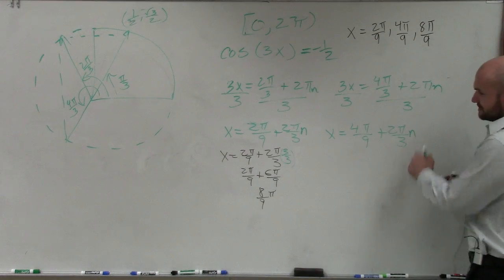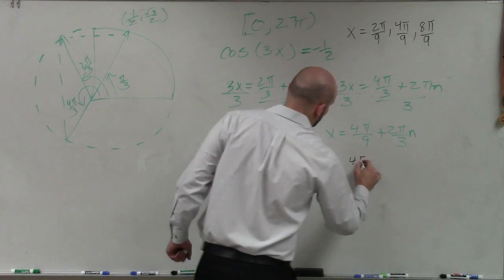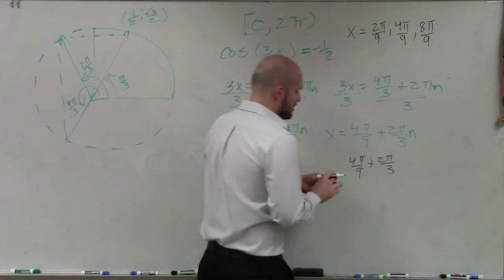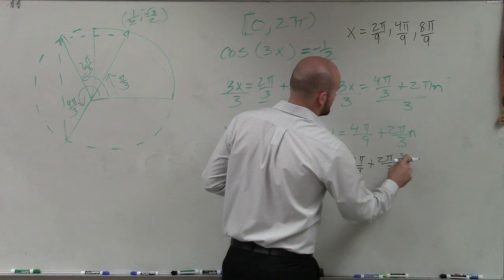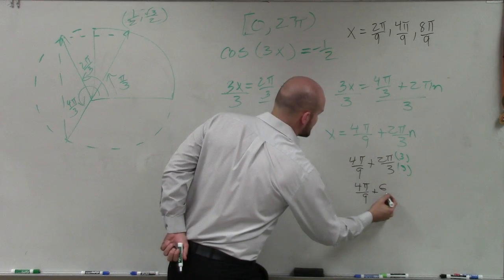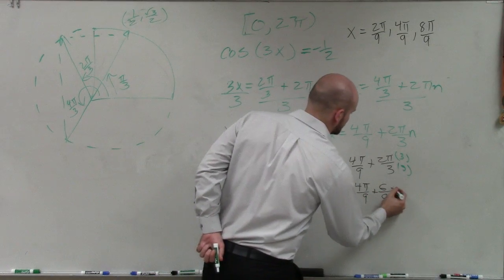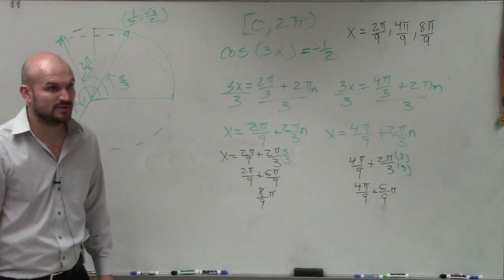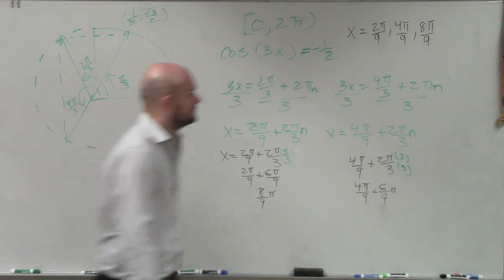What about if this equals 1? So 4π over 9 plus 2π over 3. Multiply to get common denominators. 4π over 9 plus 6 over 9. So therefore, that becomes 10 over 9. Is that still within 2π? Yes.